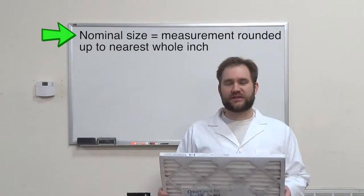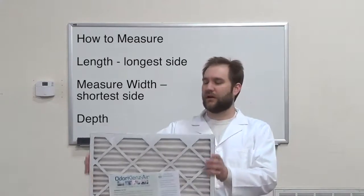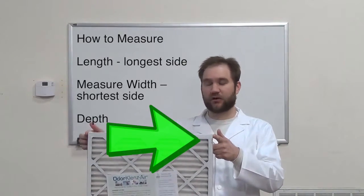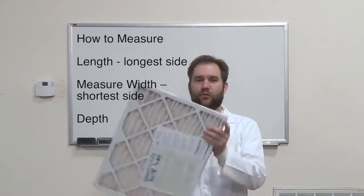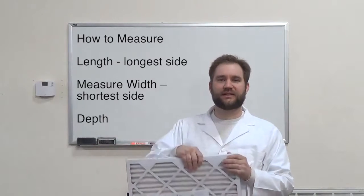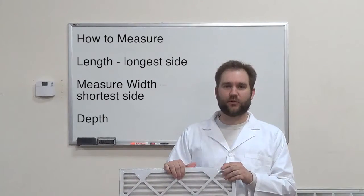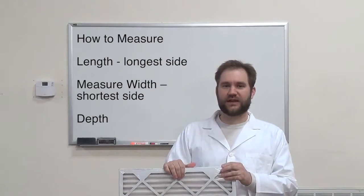If the air filter in your system does not have any measurements on it, you'll want to measure the height or the length, which is the longest side. You'll want to measure the width, and then you'll also want to measure the depth. Do that to the nearest sixteenth of an inch, and then round that up to the nearest whole inch. And that's what your nominal air filter size is.